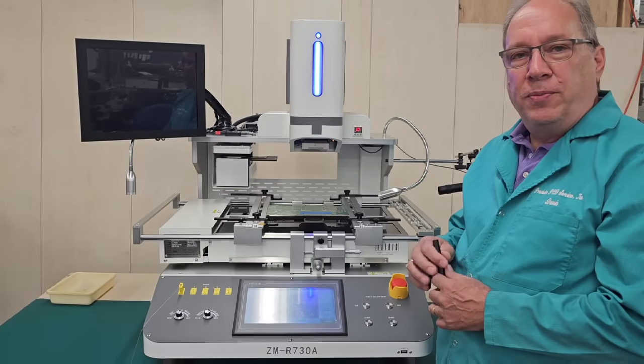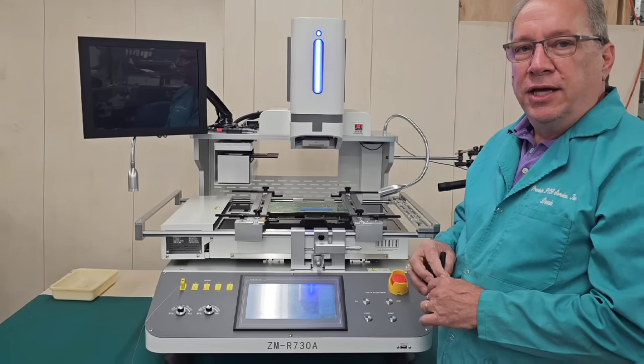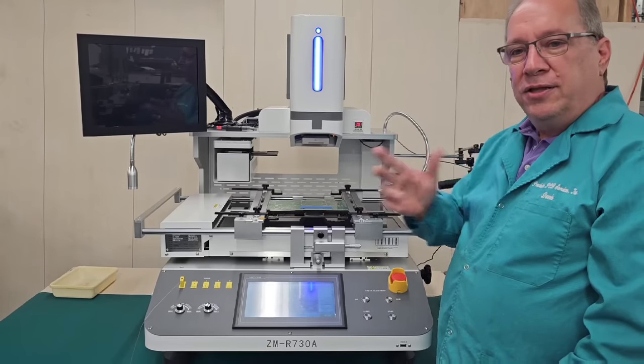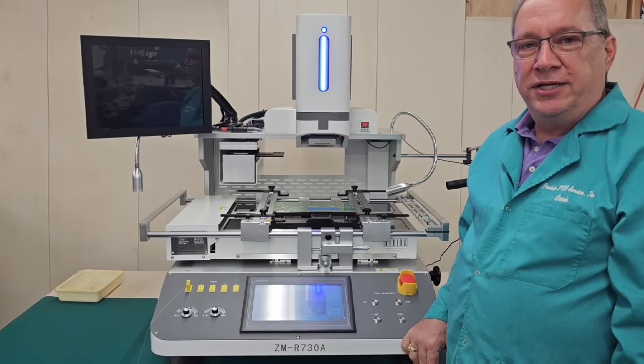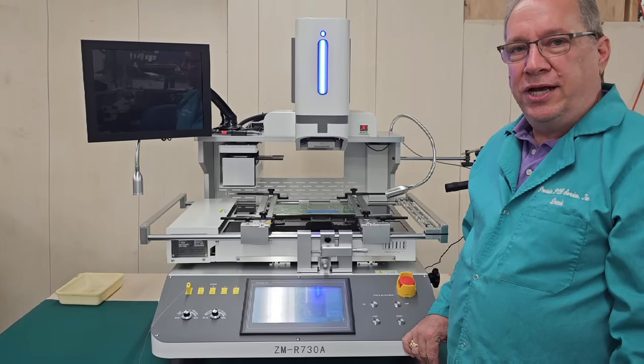It has a robotic vision system that we can move around the perimeter of the BGA so we can observe the perimeter balls on all the BGAs in high zoom. And we'll show that as we get to the demo.